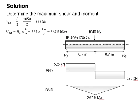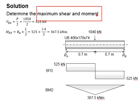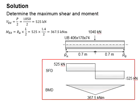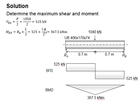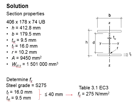To solve the problem, first you need to determine the maximum shear and moment load. To do so, you need to sketch the shear force and bending moment diagram. The shear force is obtained as P divided by 2, which is the highest point of the shear force diagram, giving 525 kilonewtons. The maximum bending moment occurs at mid-span, as the area of the shear force diagram.